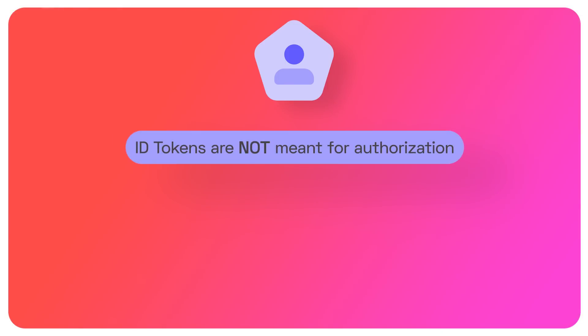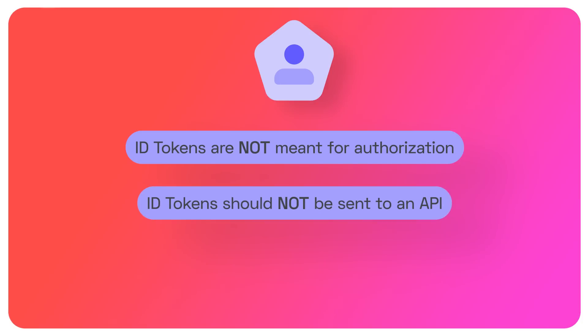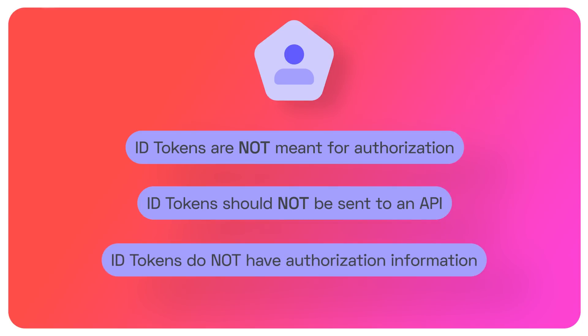Let's recap what these different types of tokens are not intended for. ID tokens are not meant for authorization — they are strictly for verifying that a user has logged in or authenticated themselves, which means they should not be sent to an API. Remember the audience claim: that audience is the application the user is logged into, not a separate API. ID tokens also do not have any authorization information inside them, so they would be useless to send to an API anyway. We don't send ID tokens to APIs and we don't use them for authorization.